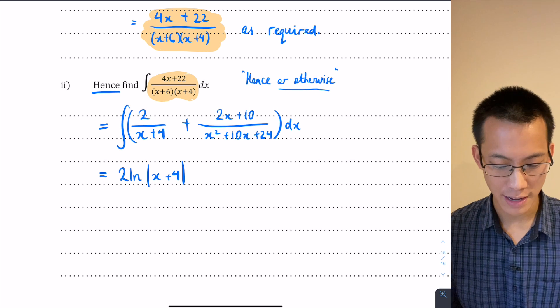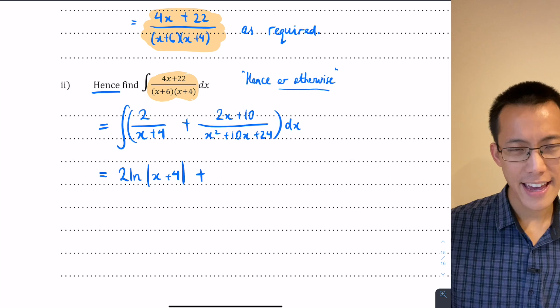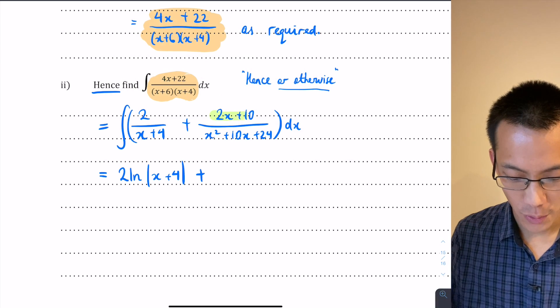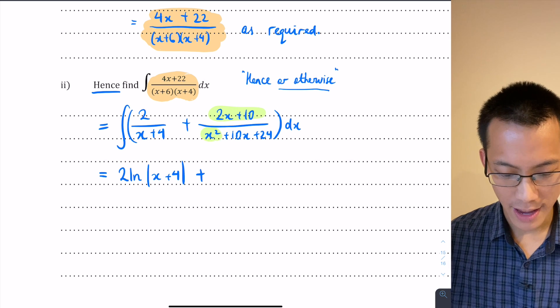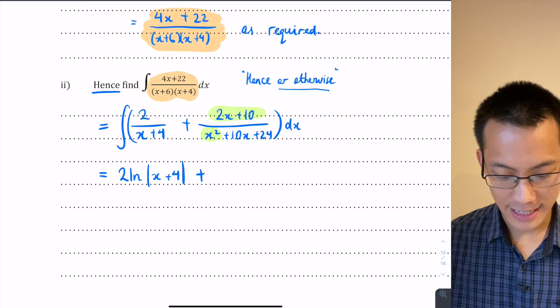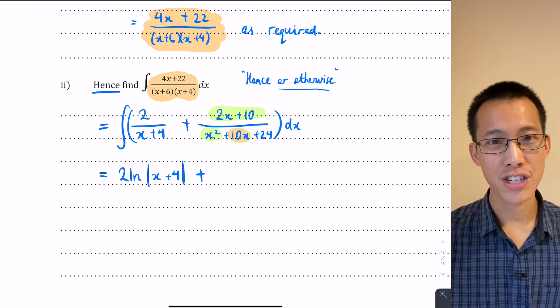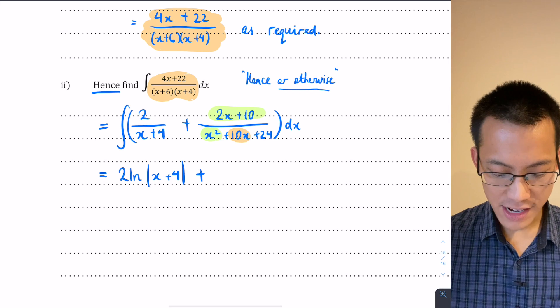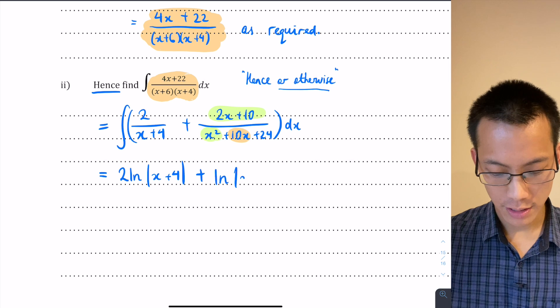And again I've got those absolute value signs there. Then when I have a look at the next one, 2x + 10, look carefully at that. 2x + 10 is not a coincidence. Do you notice the 2x is just above an x², and this 10 is just above the 10x? You've got an f' over f situation here. Therefore, the integral of this is just log of whatever the denominator was, which in this case is x² + 10x + 24.